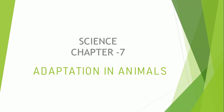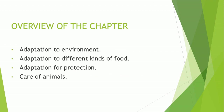Hello children. Today we are going to discuss science chapter number 7, adaptation in animals. In this chapter we are going to discuss about adaptation — why and how animals adapt themselves to different environments, different kinds of food, protection from danger, and how we can care for animals. Now first we shall understand what is adaptation.